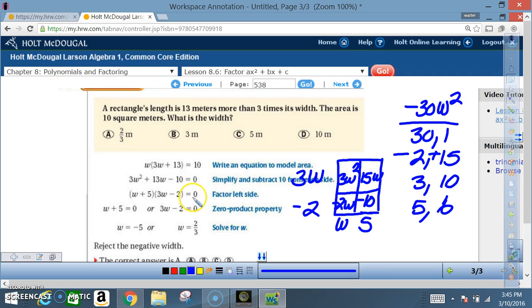we set them equal to 0 as usual. So using the zero product property, we got w plus 5 equals 0. When we solve this for w, we end up with a negative 5. Don't forget, minus 5 minus 5, the 5s right there cancel...